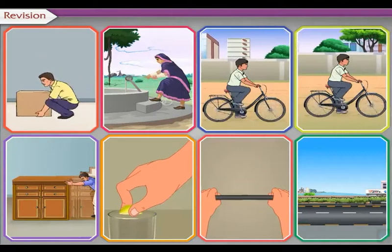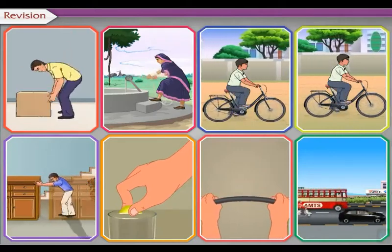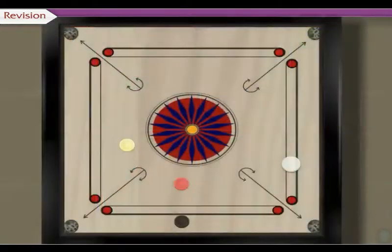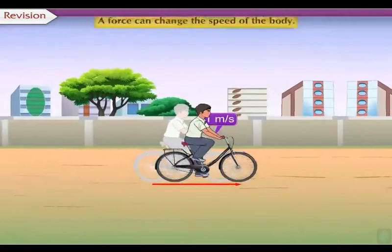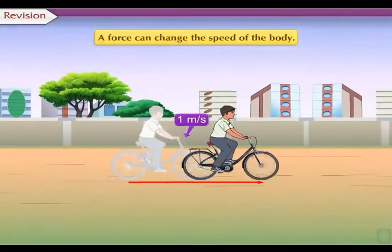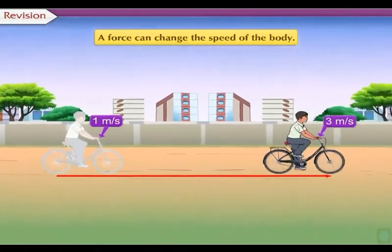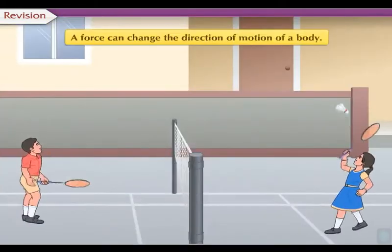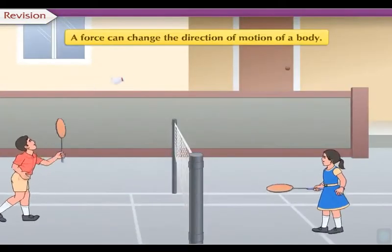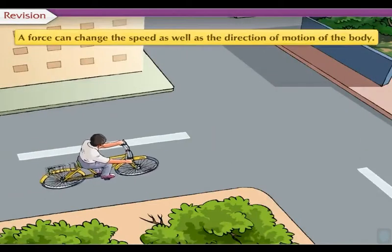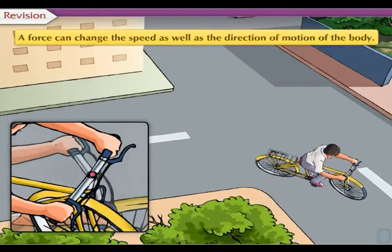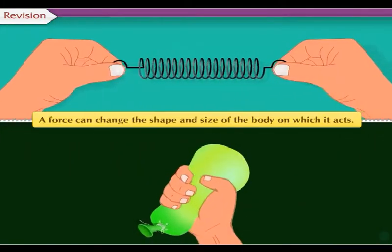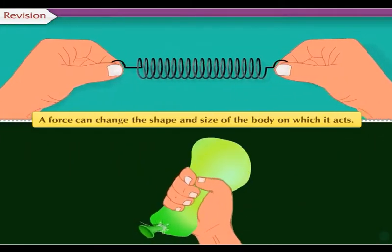There are various effects of a force acting on a body. A force can set a stationary body in motion. A force can change the speed of the body. It can change the direction of motion of the body. A force can change the speed as well as the direction of motion of the body. A force can also change the shape and size of the body on which it acts.